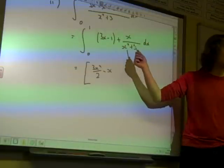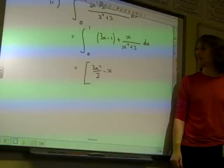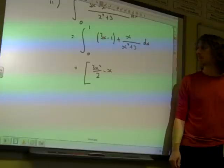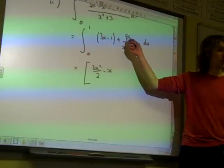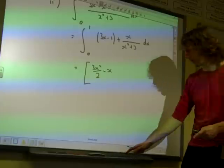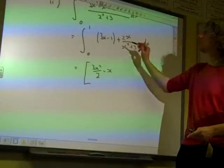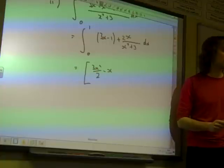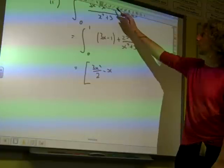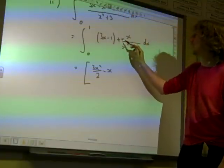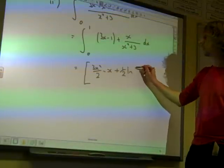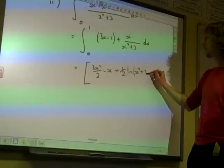Now this bit here is a particular type of problem - the top is almost the derivative of the bottom. If we had a 2 in front of the x, then the top would be the derivative of the bottom. But if we had a 2 there, we'd have twice as much. So it must be (1/2)ln(x² + 3).